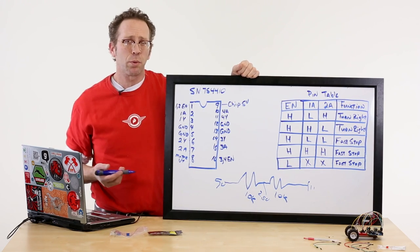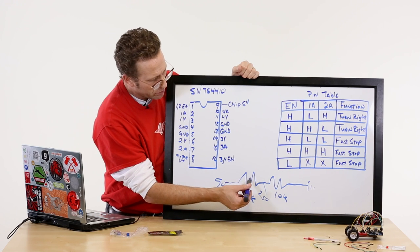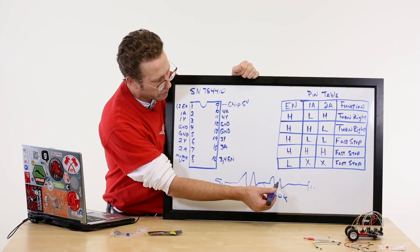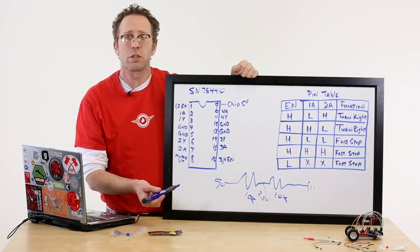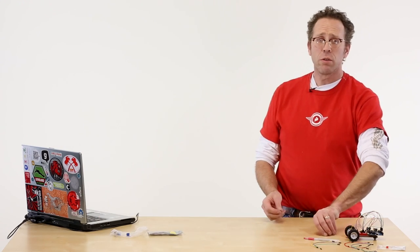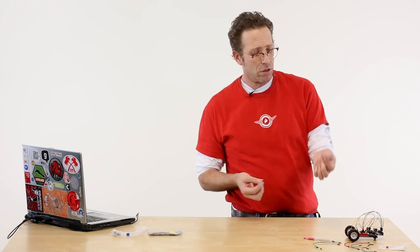When we work with these potentiometers, they're basically two stacked variable resistors where this resistance either increases while this one decreases or this resistance increases while this one decreases.